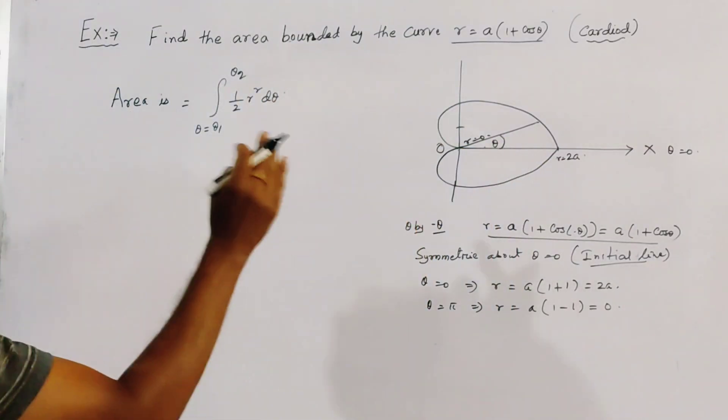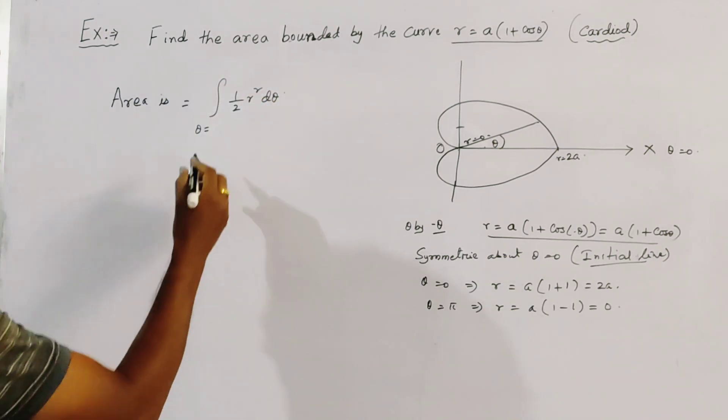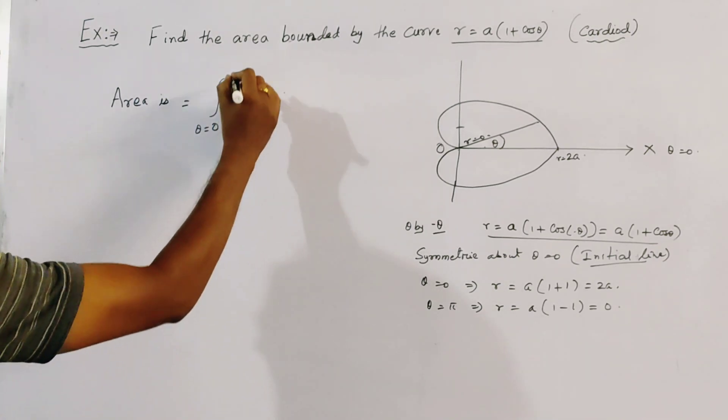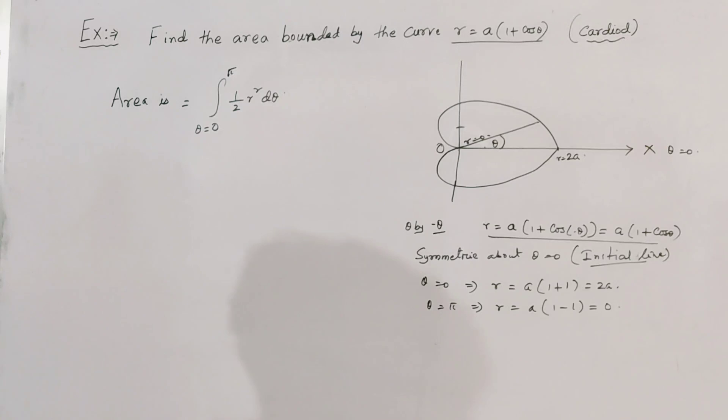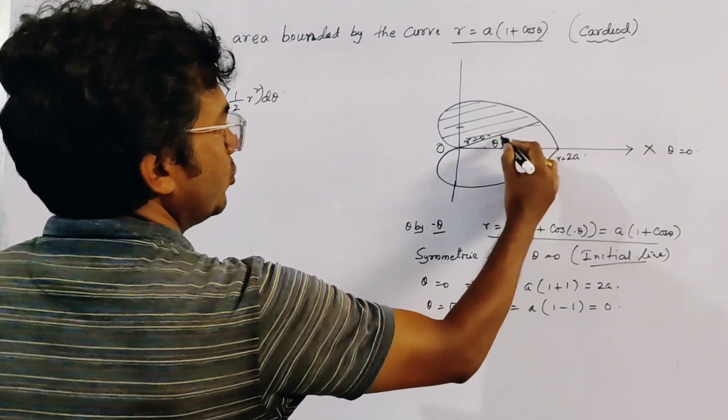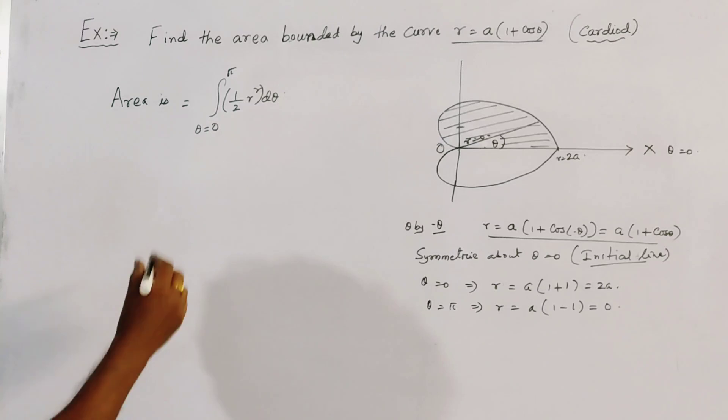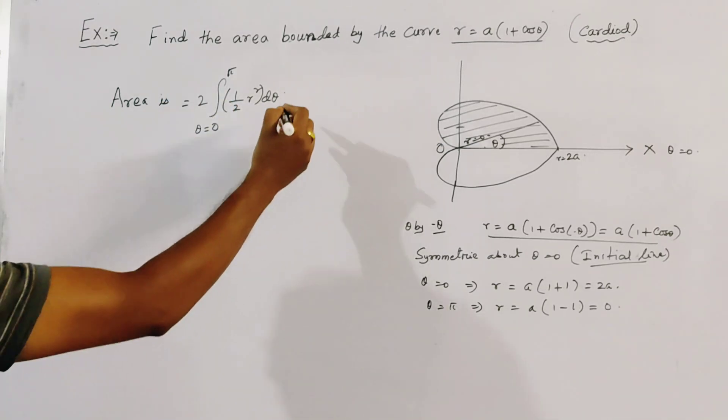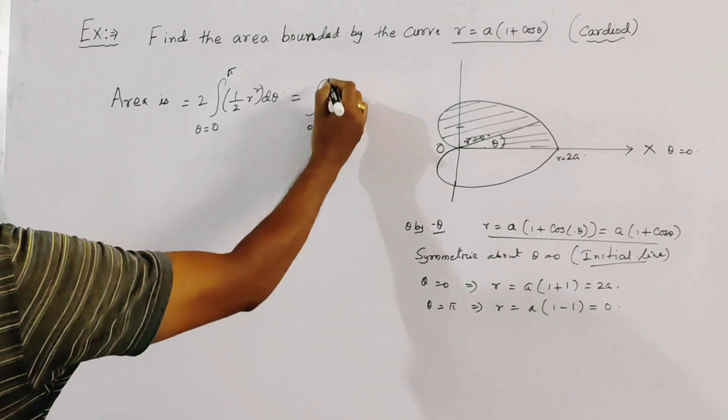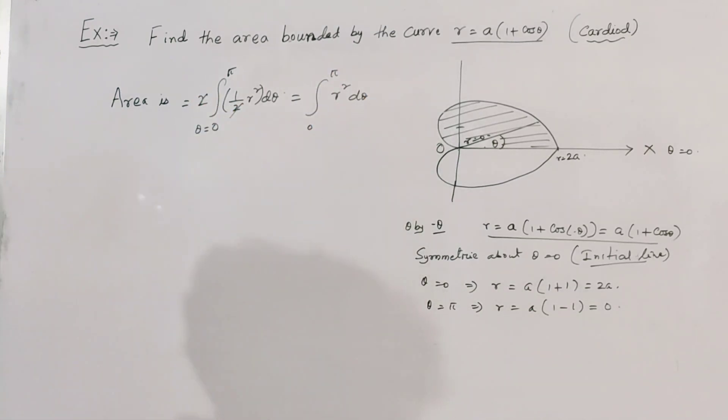So our formula becomes, if we take the range of theta from theta equal to 0 to theta equal to pi, then this is half R squared d theta, and we get the area of the portion above the initial line. And we have to find the total area, so we multiply here by 2. So area is 0 to pi R squared d theta, because the 2 cancels out.